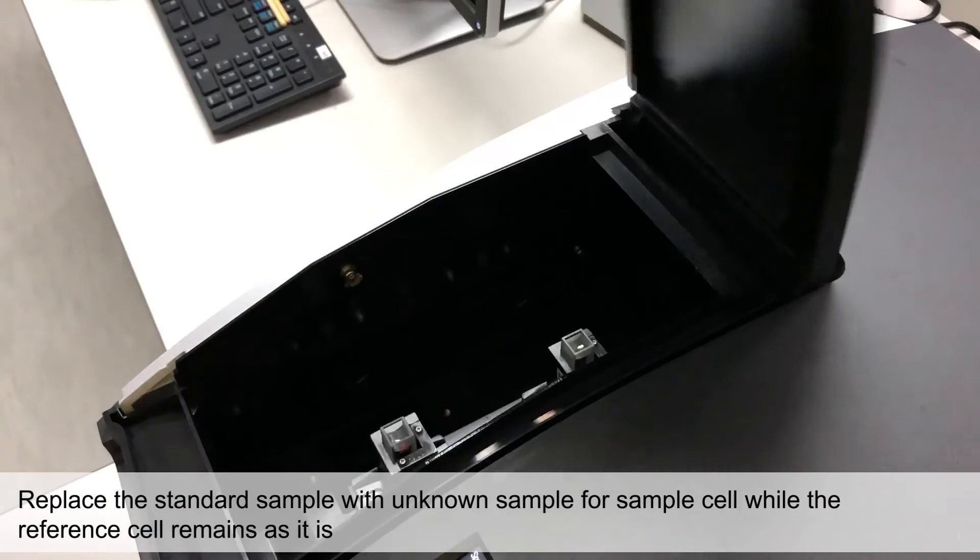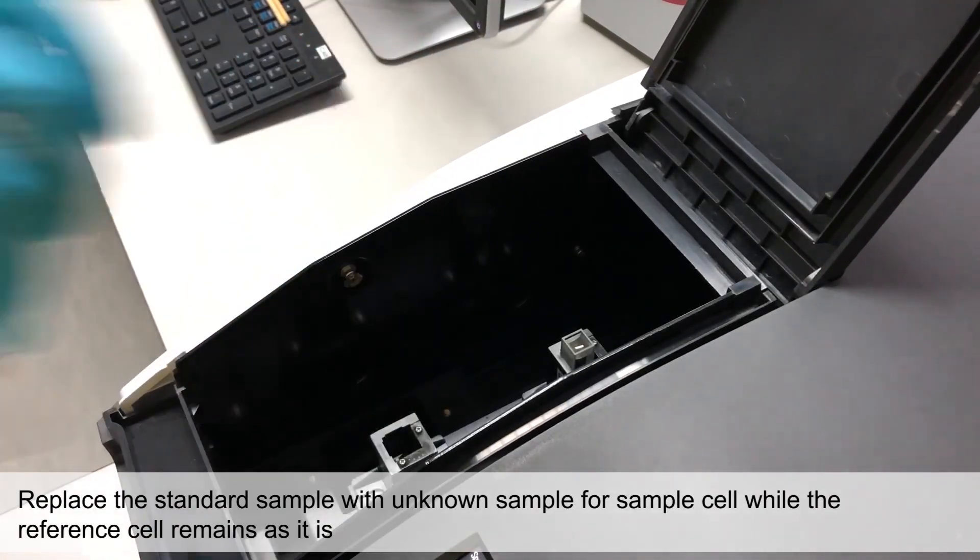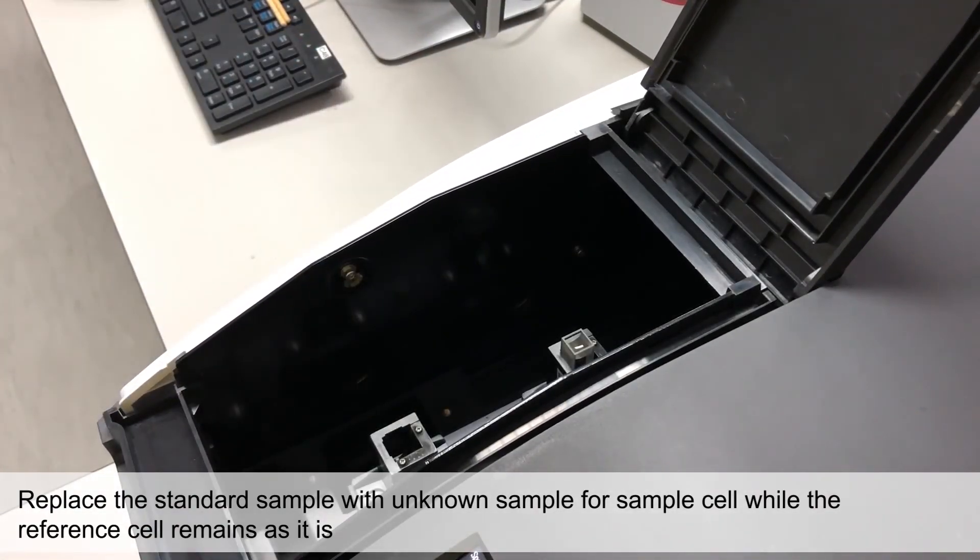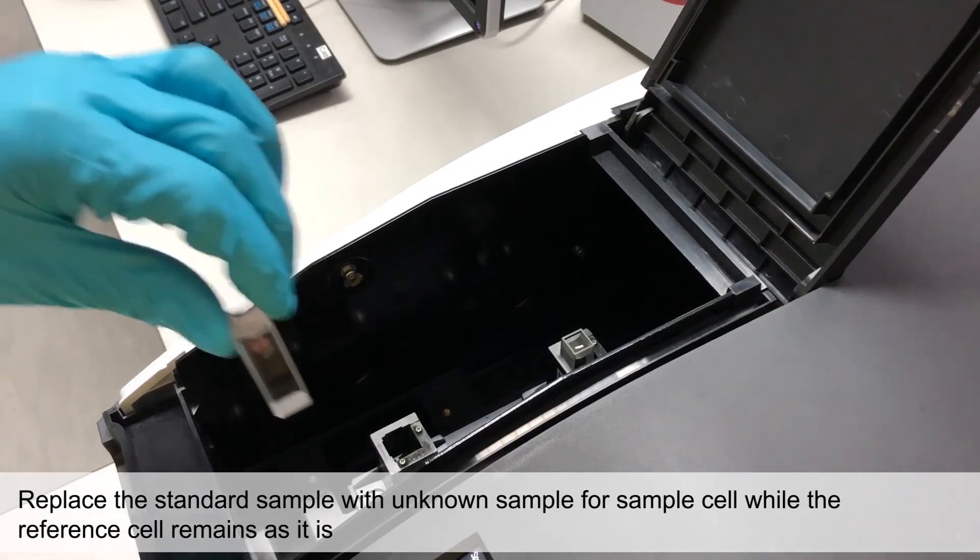Next, replace the Standard Sample with the Unknown Sample for the sample cell. The cuvette in the reference cell remains as it is.